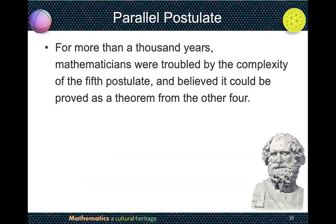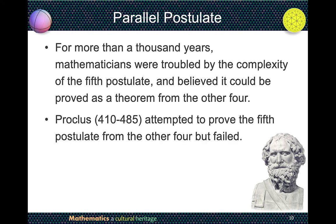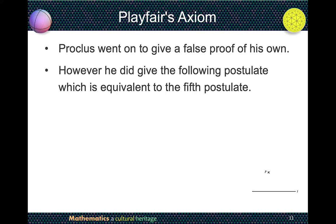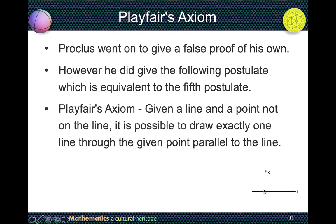For more than a thousand years, mathematicians were troubled by the complexity of the fifth postulate, and they believed it could be proved as a theorem from the other four postulates. Proclus attempted to prove the fifth postulate from the other four, but he failed — and Proclus was already 700 years after Euclid. He went on to give a false proof, but did give the following equivalent postulate. The Playfair axiom states: given a line and a point not on the line, it is possible to draw exactly one line through the given point parallel to the line.